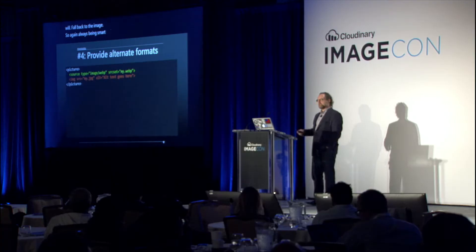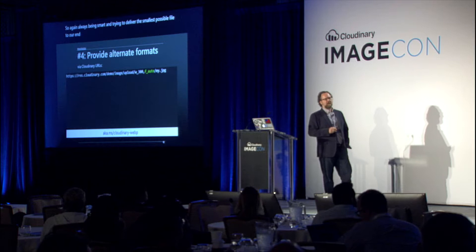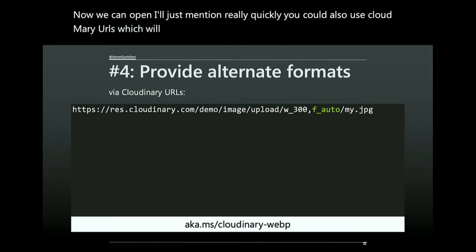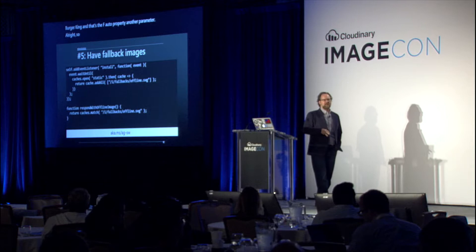You can also use Cloudinary URLs, which will automatically decide what is the best format to provide for a particular image using the f_auto parameter. Now I want to get into some things we can do with service worker.